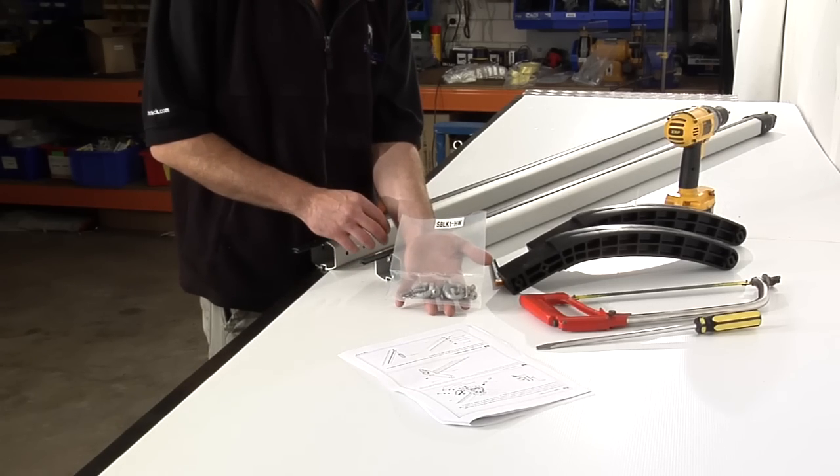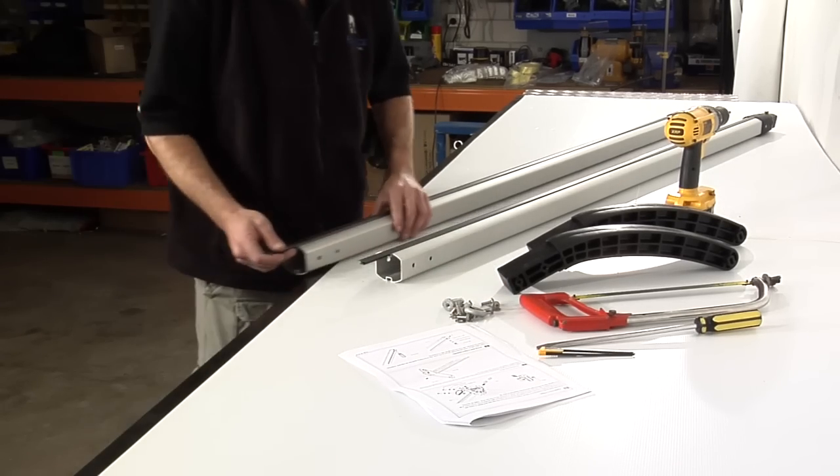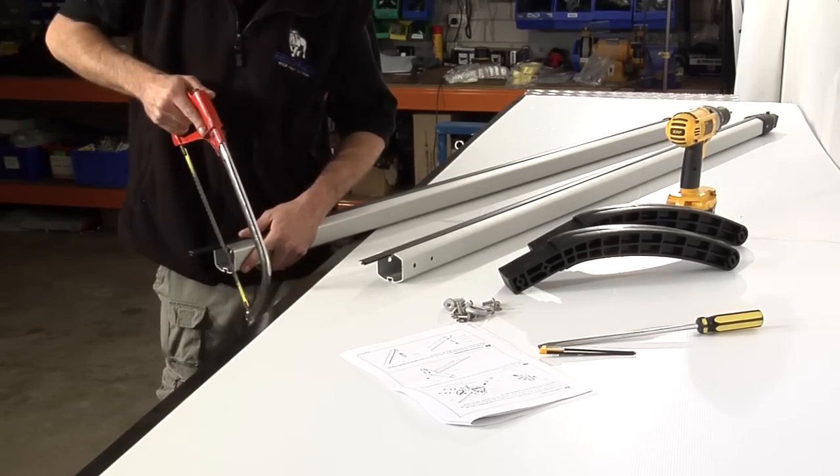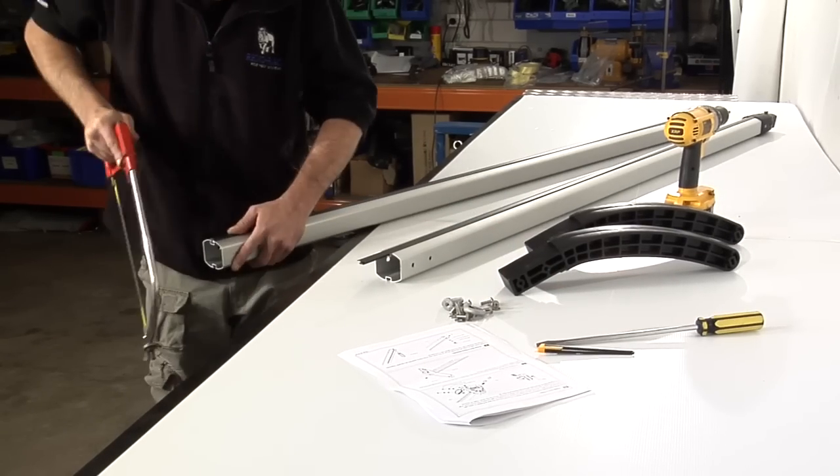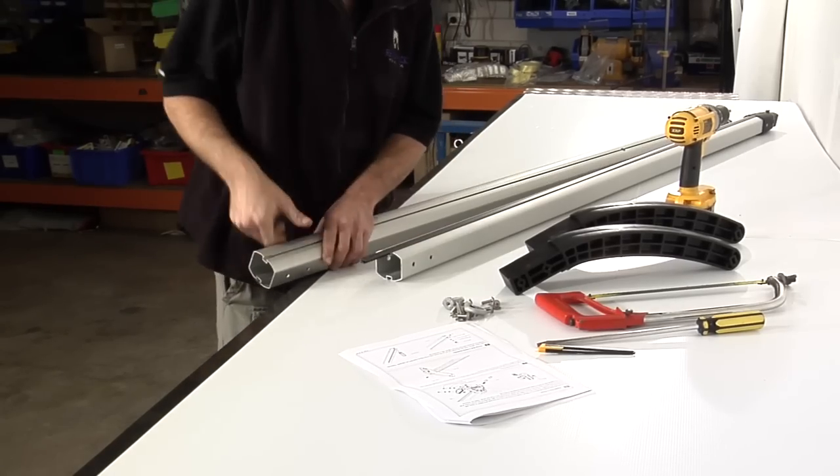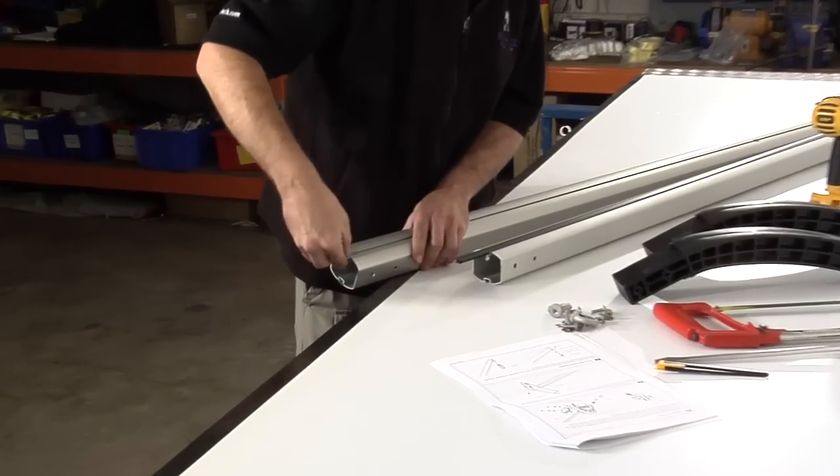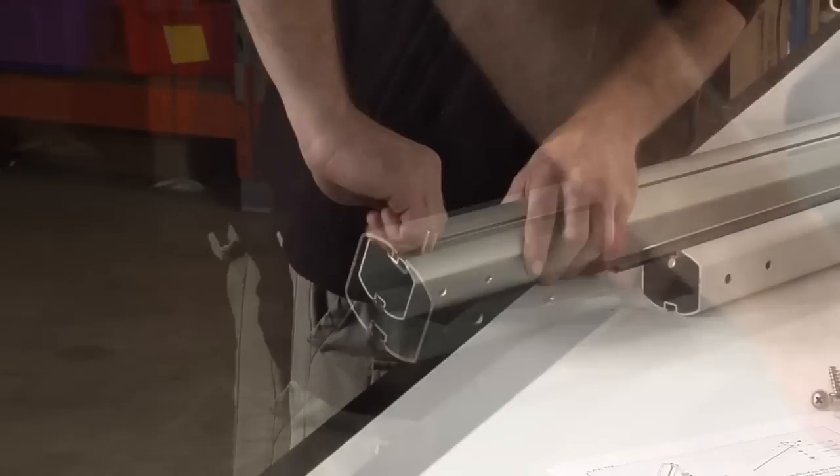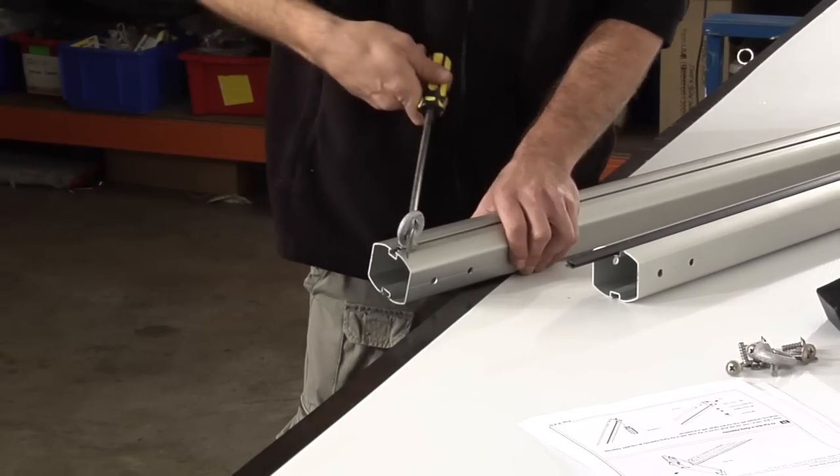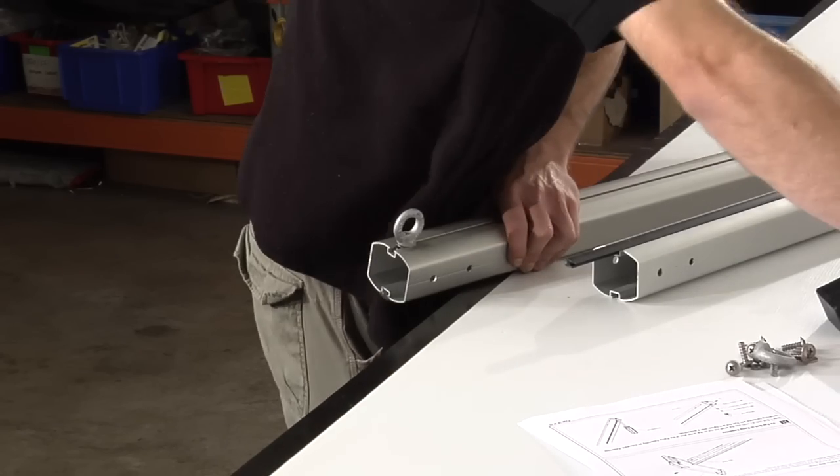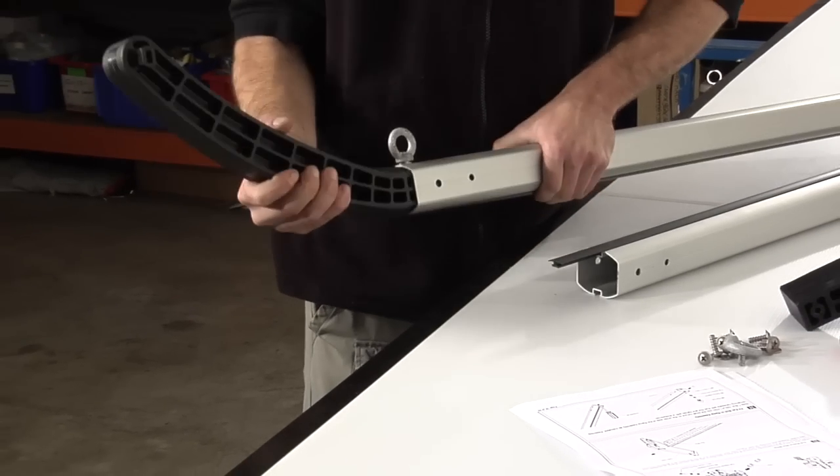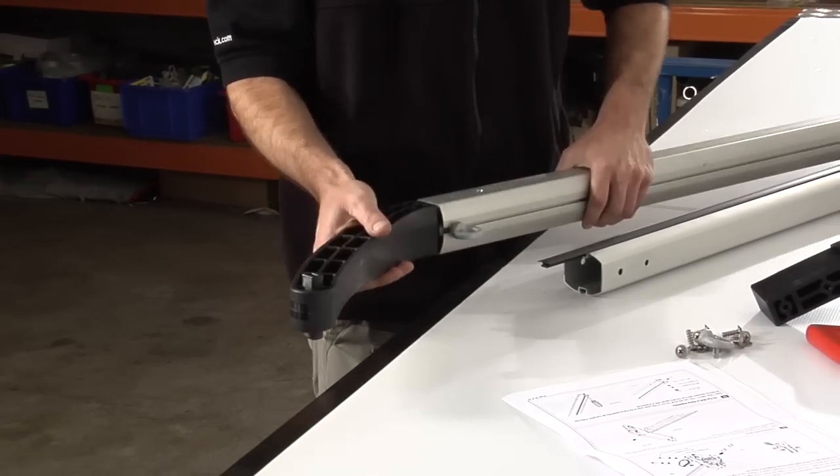Take the kit SBLK1-HW and the ramps. Cut the slip strip off flush with the end of the ramp and insert the hardware supplied for the eye bolts. Once that's secure, insert the ramp curved piece and secure that with the four screws supplied. Repeating this process to both ramps.